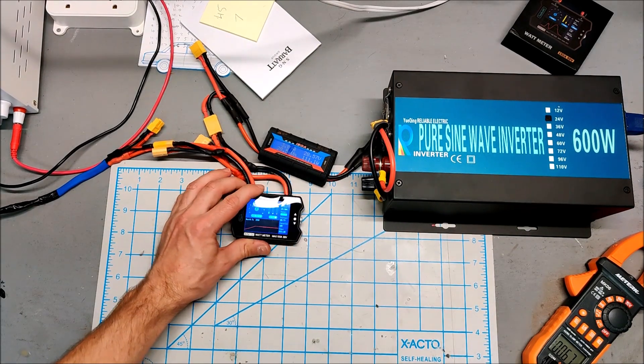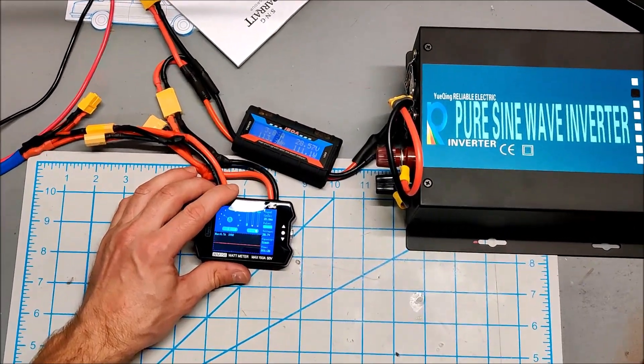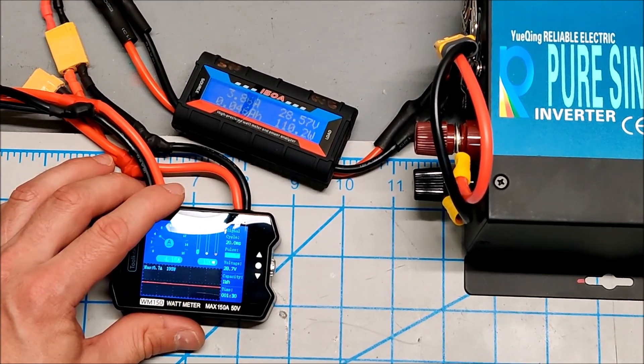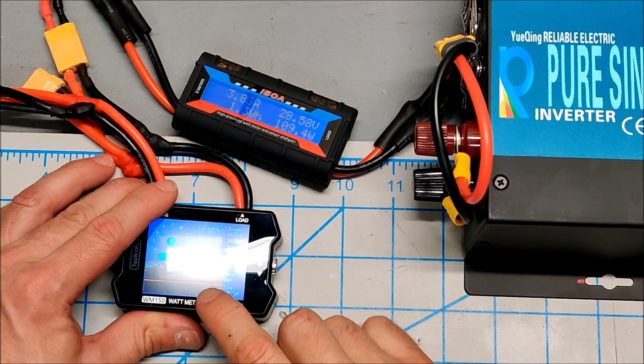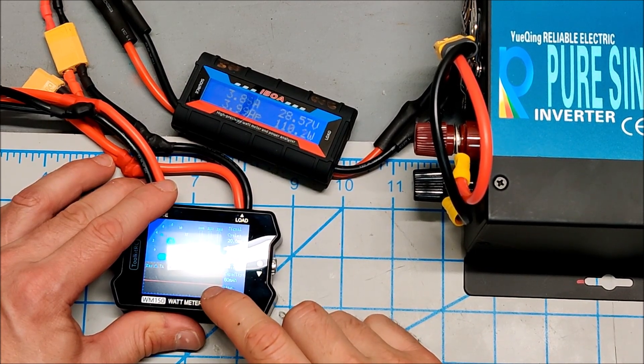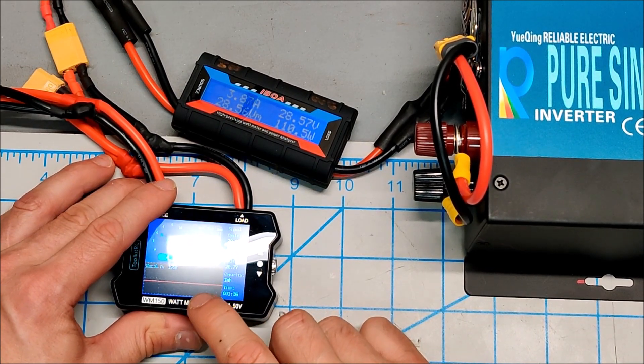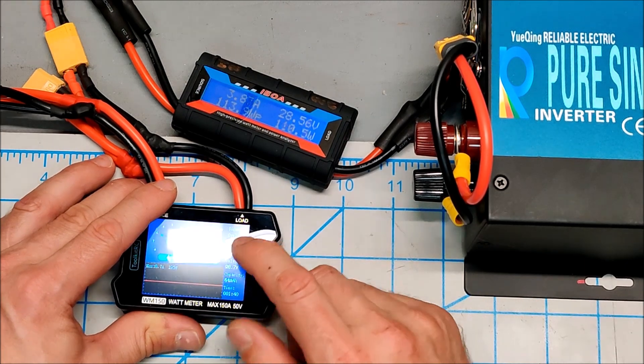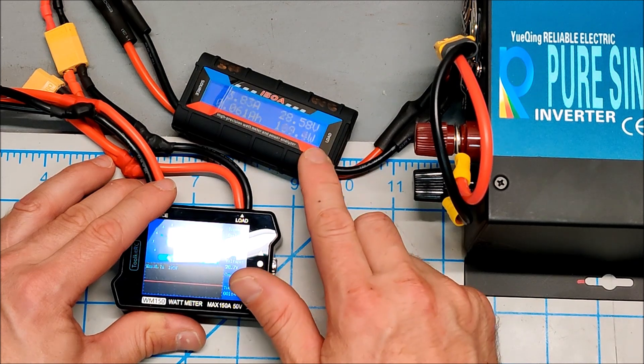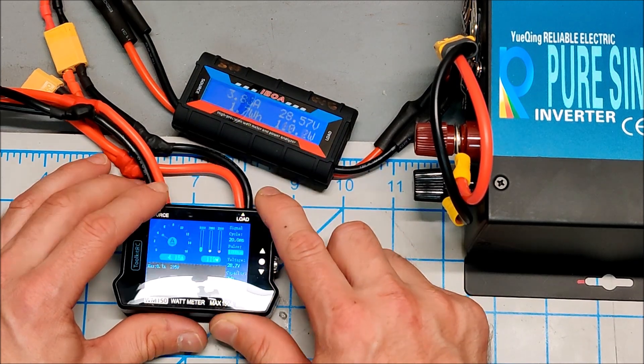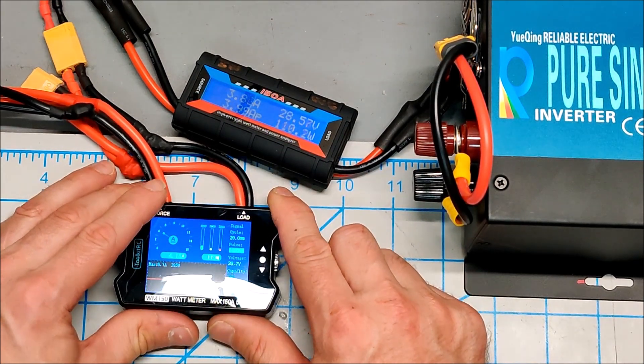And now let me zoom you in. You can see this graph here is showing a nice consistent current draw. Actually, this is wattage, so a nice consistent wattage draw.